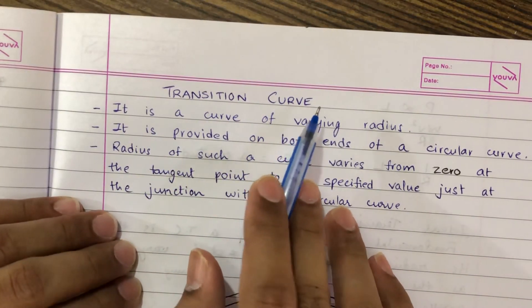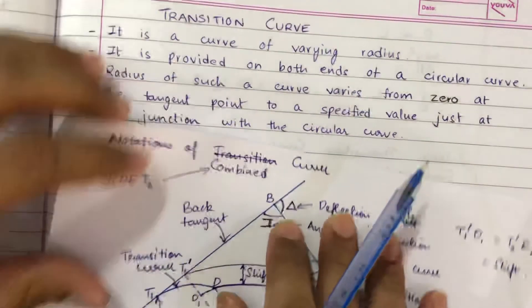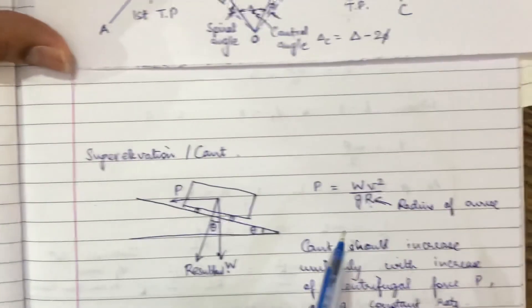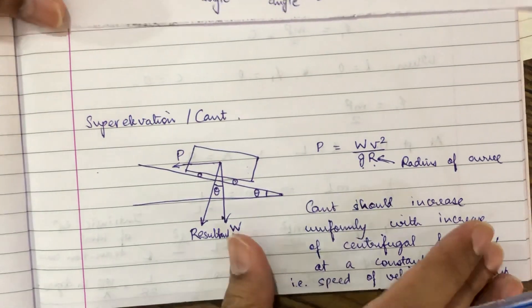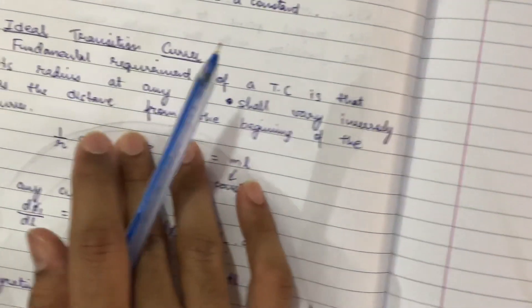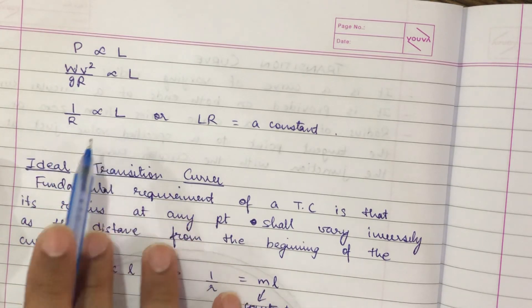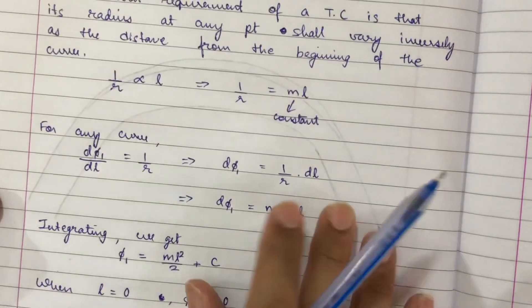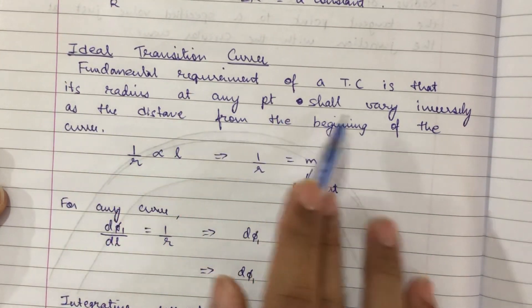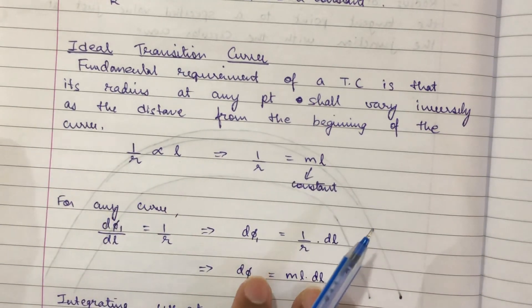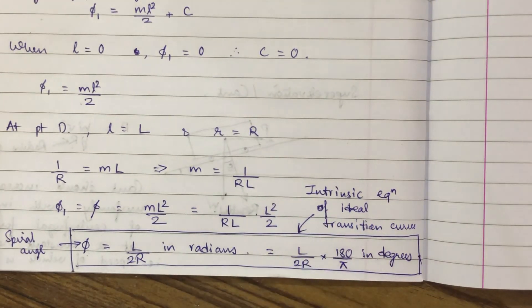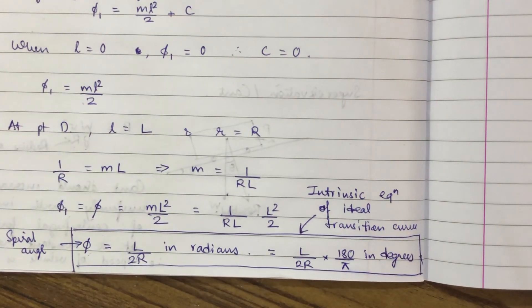In today's lecture, we learned about the transition curve — what a transition curve is, the notations of the combined curve (transition curve plus circular curve), what super elevation or cant is, the equation for centrifugal force, the ideal requirement that 1/R ∝ L (radius at any point on the transition curve is inversely proportional to the length), and finally the intrinsic equation of the ideal transition curve: phi = L/(2R). Thank you so much.